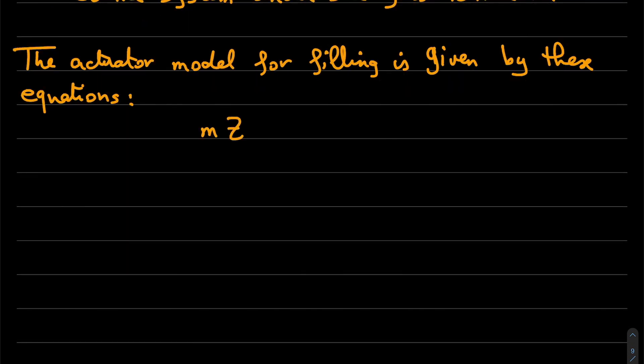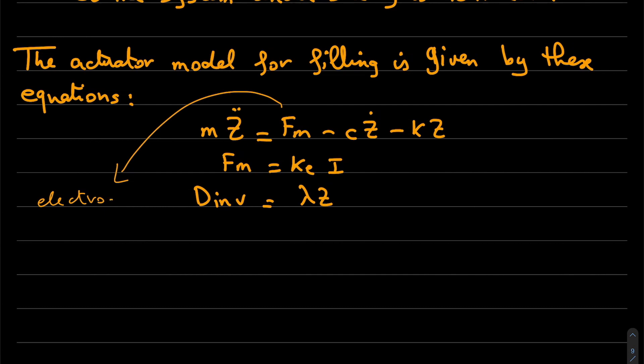For the actuator model, we have these three equations. We have the expression of F_m, which is the electromagnetic force. We have dn, which is lambda times z, and I is the current.